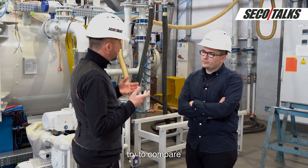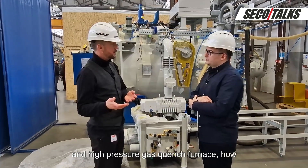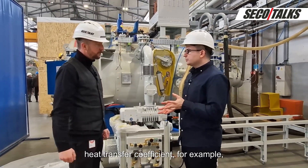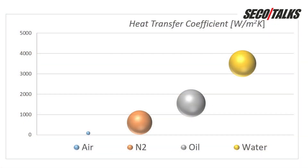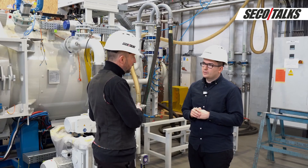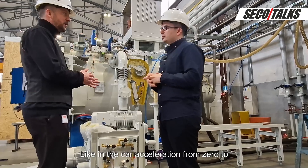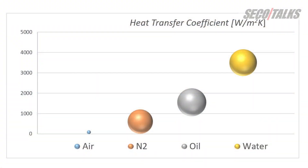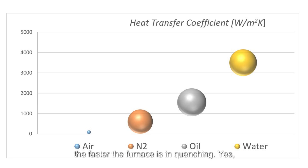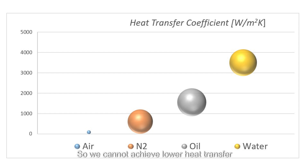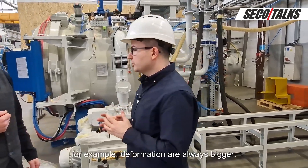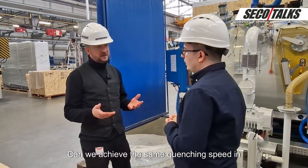Comparing quenching speed: in terms of heat transfer coefficient, in gas quenching with nitrogen we can achieve from near zero up to 1000. Think of it like a car's acceleration from zero to 100 km/h — the higher the heat transfer coefficient, the faster the furnace quenches. In the case of oil, we start from around 800 to 1000 — we cannot achieve a lower heat transfer coefficient. That is why deformations are always bigger in oil quenching.